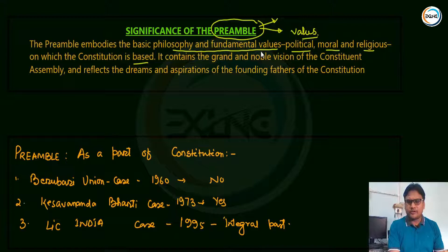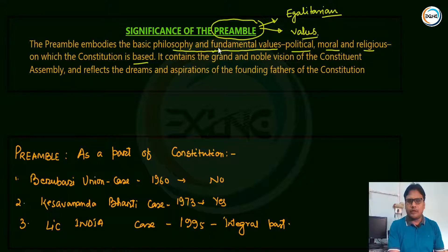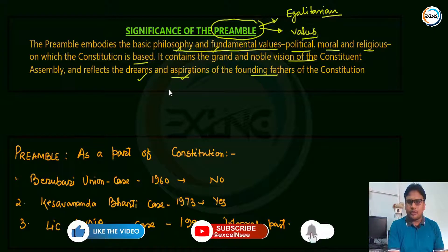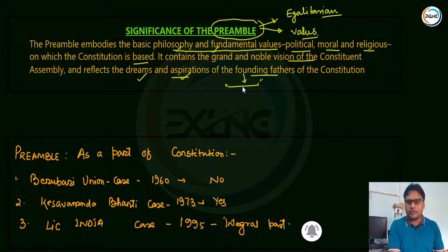The Preamble talks about the nature of the democratic state and its objectives in terms of justice, liberty, equality, and fraternity. It also talks about attaining an egalitarian society. These are the values and philosophies on which our Constitution is based. The Preamble incorporates fundamental values and fundamental philosophy, along with the visions, futuristic thinking, aspirations, and dreams of our Founding Fathers — the values that emerged from the Indian National Movement and our value-based past.